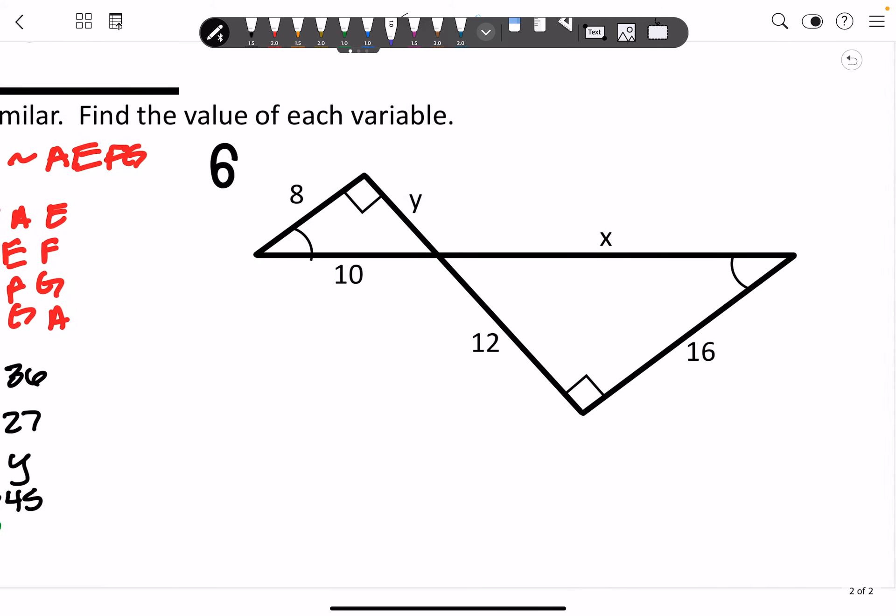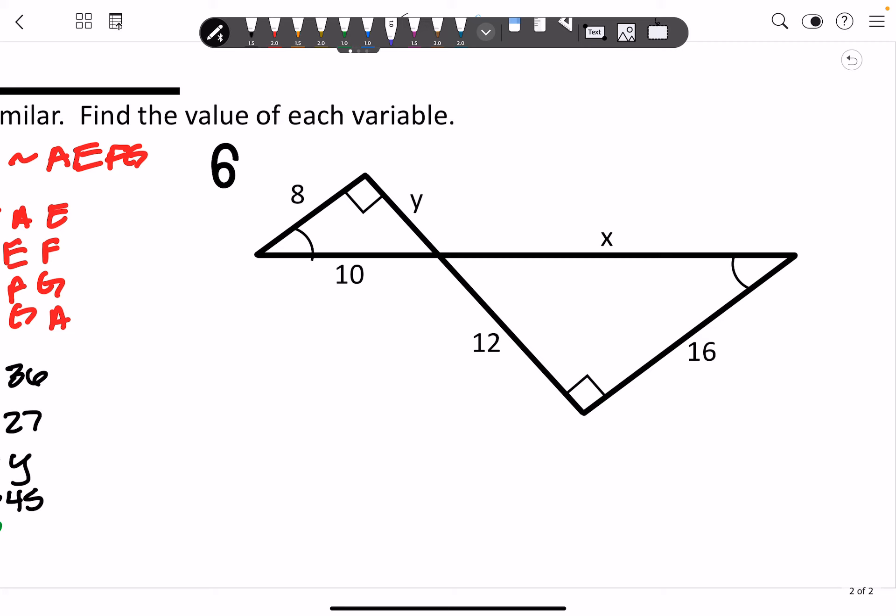So something similar is going to happen here. I recommend that you go ahead and label your points. So T, R, I is what I did. And that means I did N, G here.